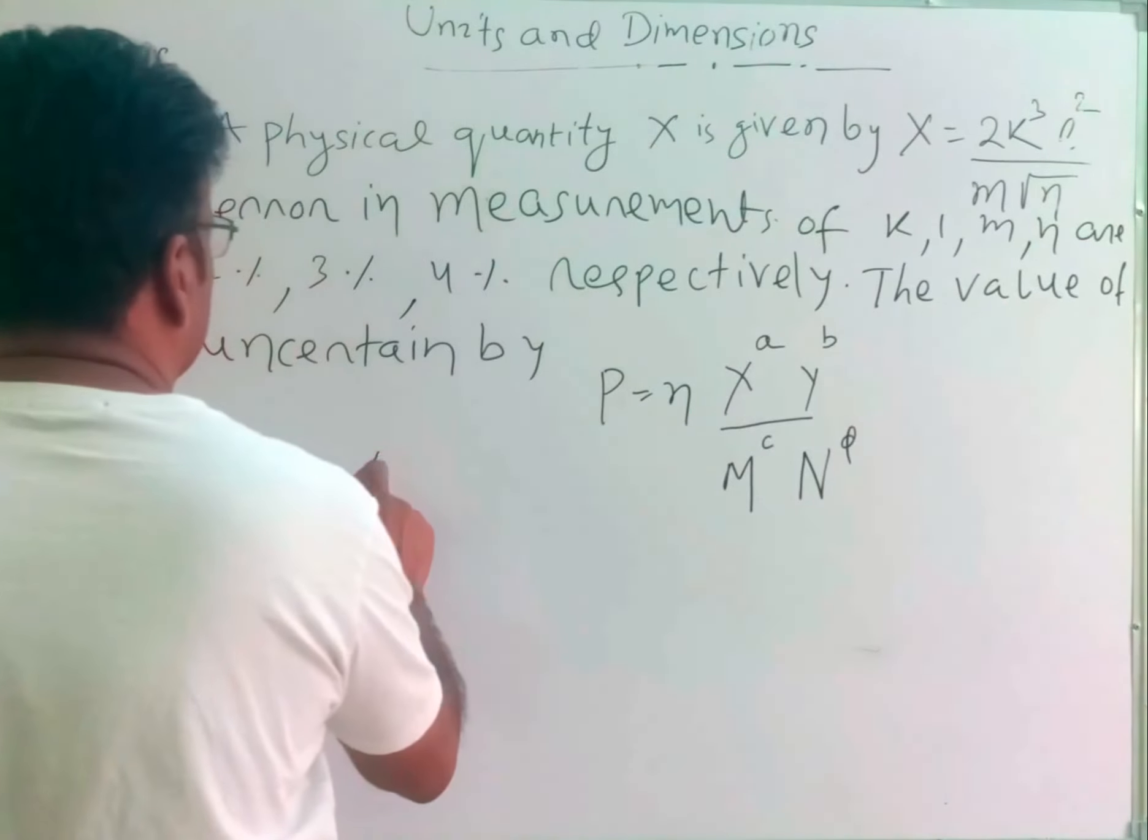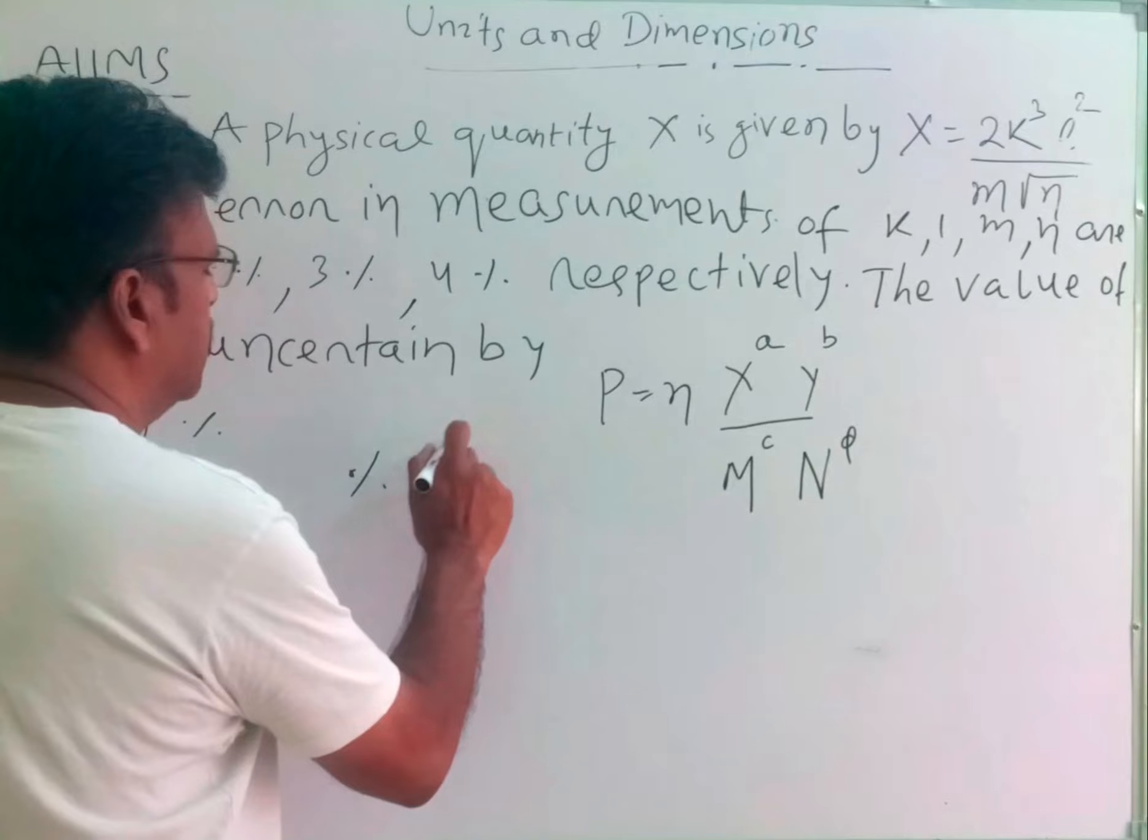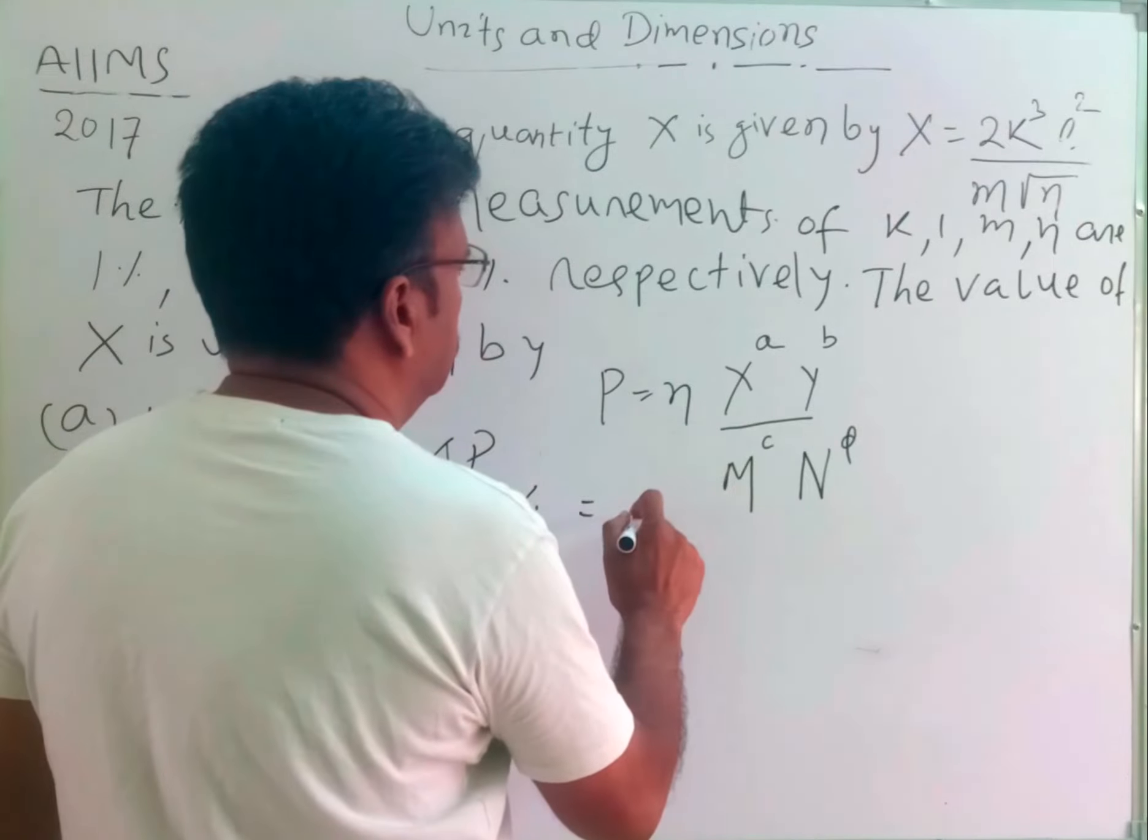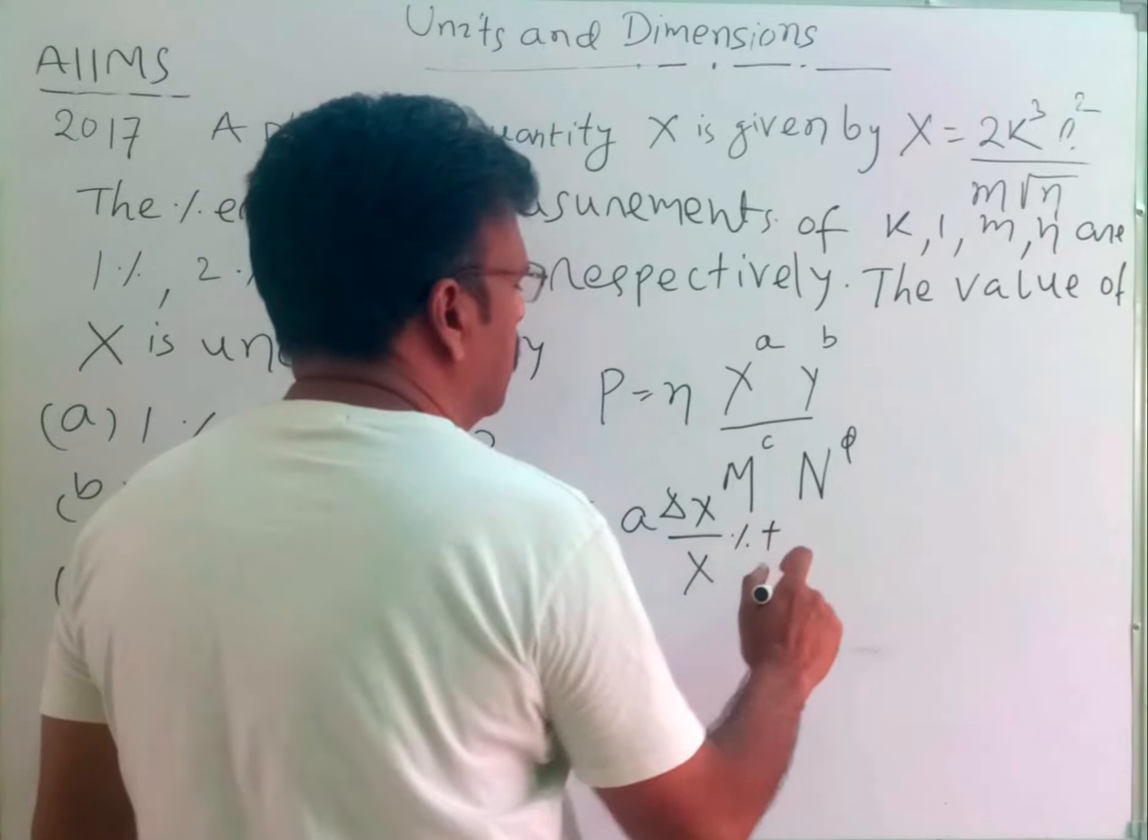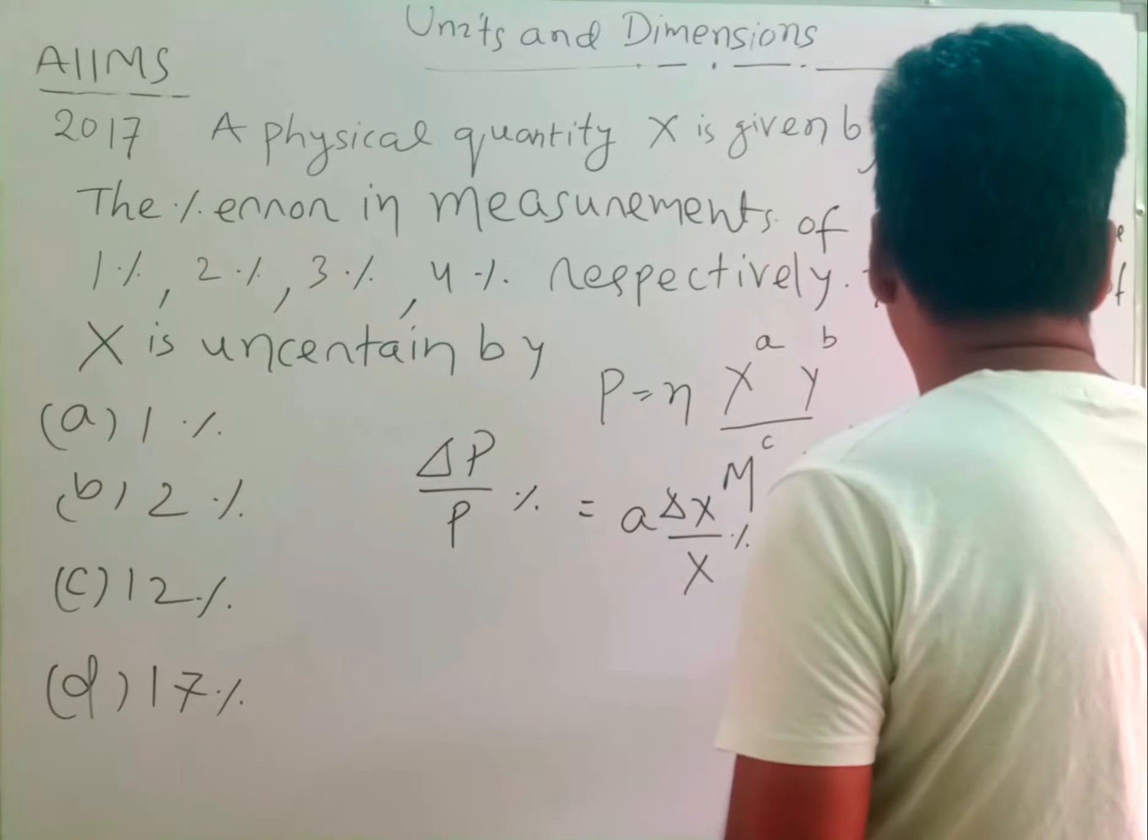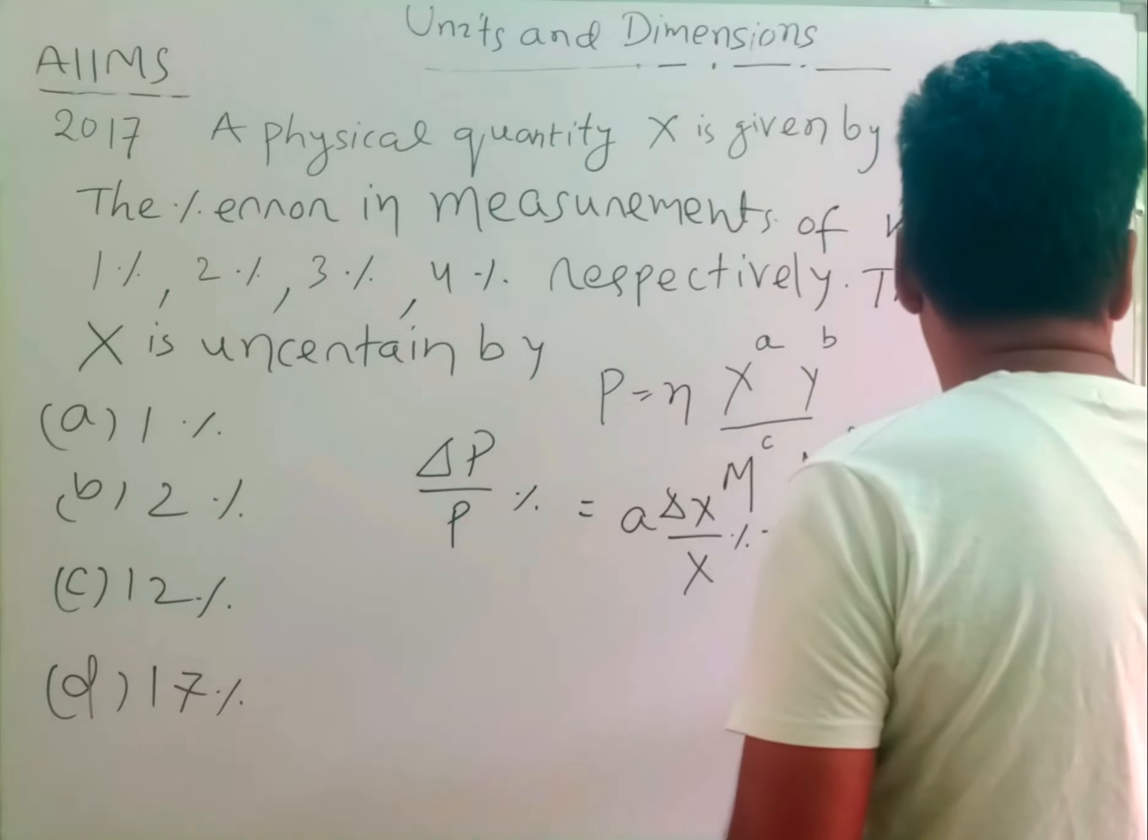what will be the percentage error in measurement of P, that is ΔP/P percentage? Students, that will be equal to A(ΔX/X)% plus B(ΔY/Y)% plus C(ΔM/M)% plus D(ΔN/N)%.